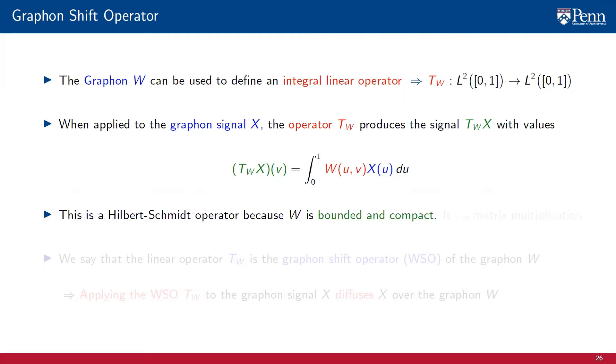T_W is what we call a Hilbert-Schmidt operator. This is because W is bounded and compact. The most important point to remark is that this operation is conceptually the same as a matrix multiplication. It is, in fact, the limit of a matrix multiplication. Integrals are not sums, but it is always helpful to think of them as sums.